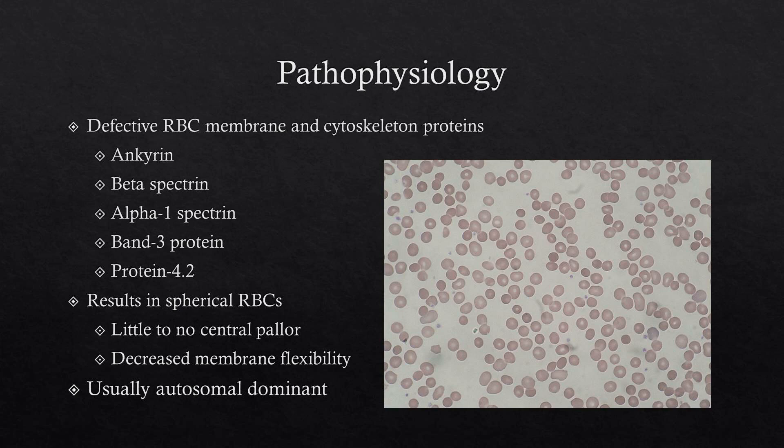At its core, hereditary spherocytosis is a disease based on defective red blood cell membrane and cytoskeleton proteins, which results in decreased membrane flexibility. Those are what you need to know for rotations and USMLE — defective membrane cytoskeleton proteins in the RBCs. These are the proteins that can be affected.